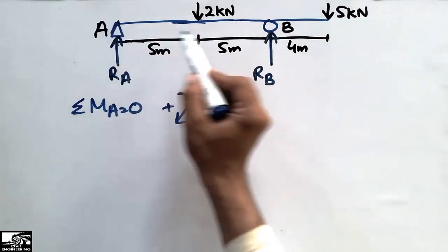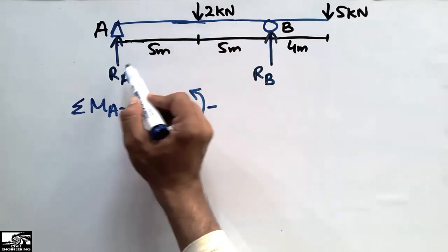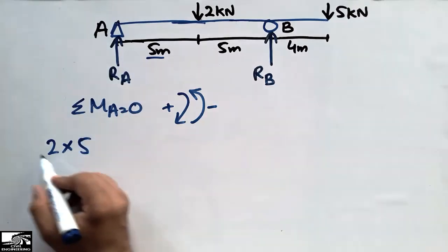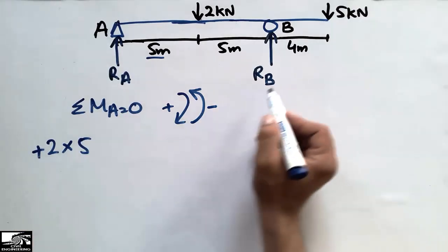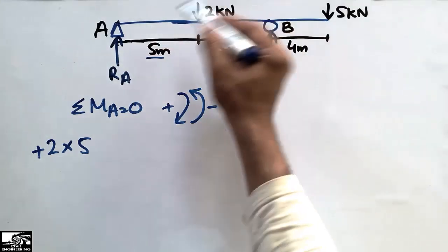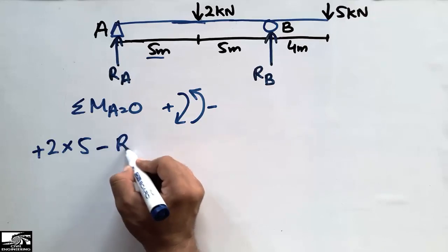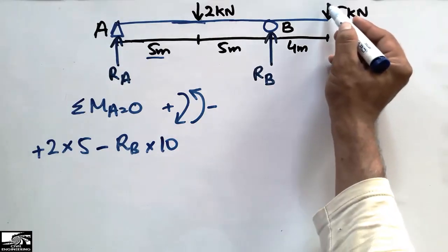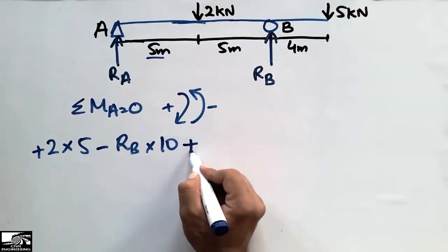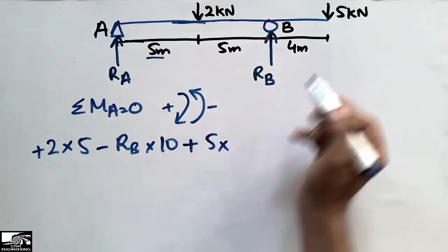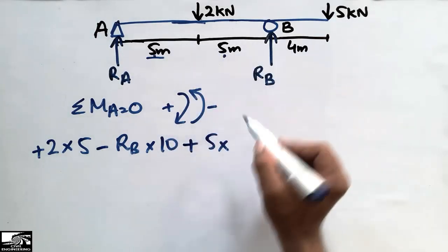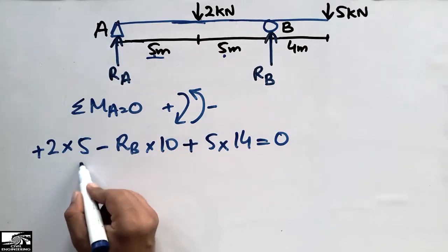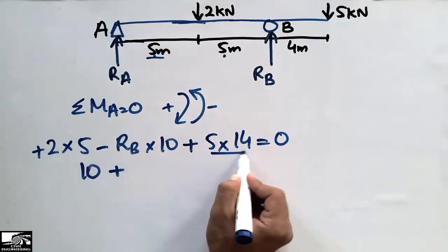The 2 kN force acts clockwise at a distance of 5 meters, so we get plus 2 × 5. RB acts anti-clockwise at a moment arm of 10 meters, so minus RB × 10. The 5 kN force acts clockwise at a distance of 14 meters, so plus 5 × 14. Setting the summation of moments at A equal to zero gives us 10 + 70 minus 10·RB = 0.